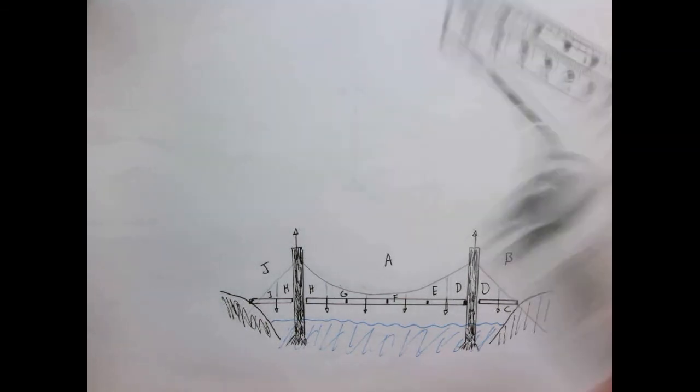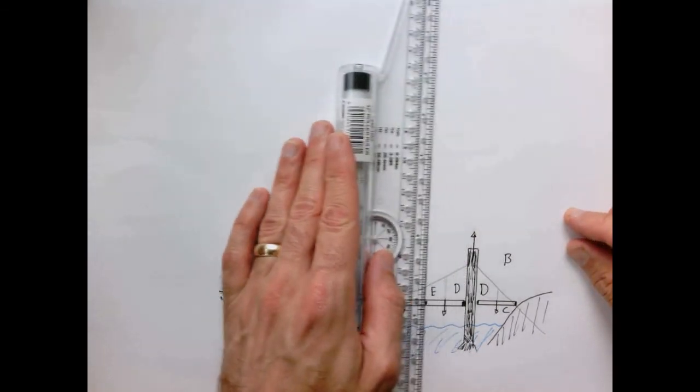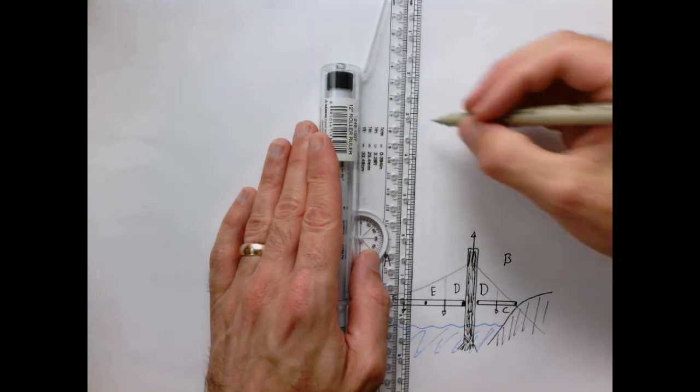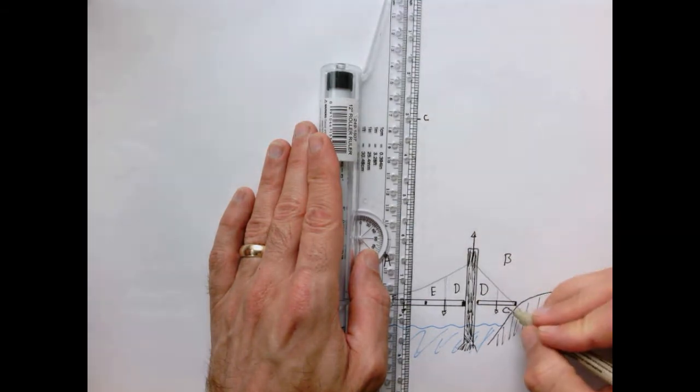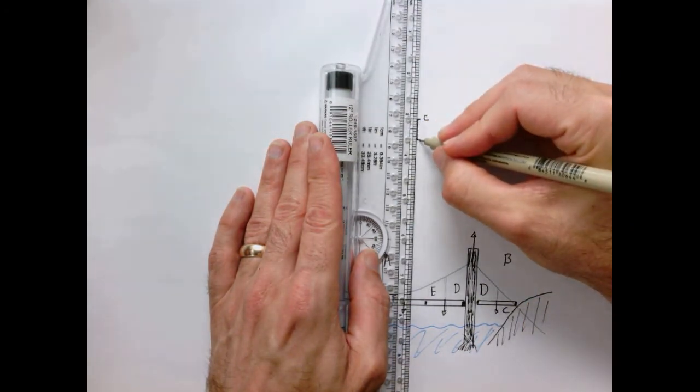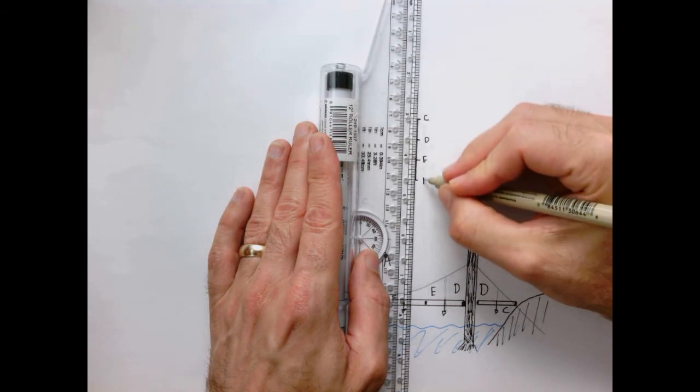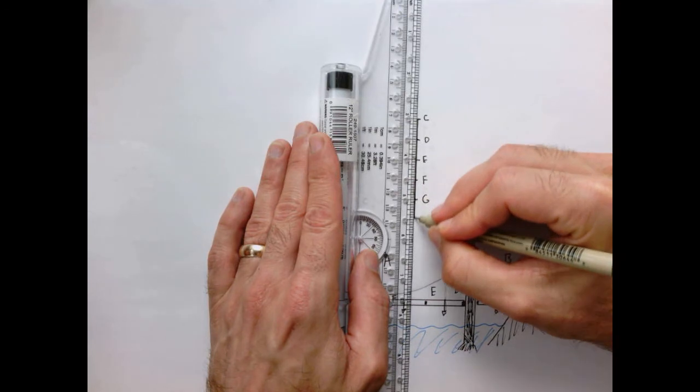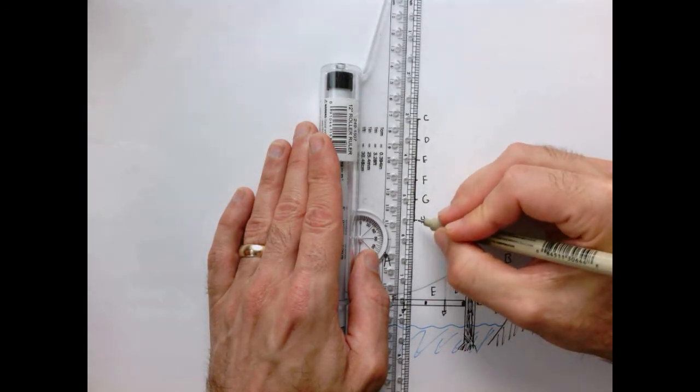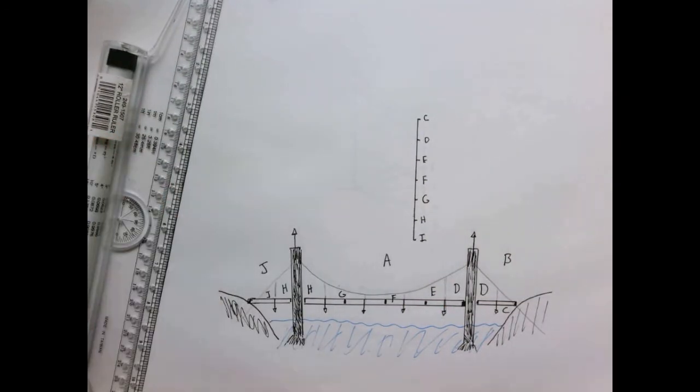Now let's draw our vertical line for our loads. I'll line things up with the tower here and I'm going to use a half inch scale. Let's start here at point C. So we have C to D, D to E, E to F, F to G, G to H, and H to I. Those are my downward loads. Now I just need to define points A, B, and J.